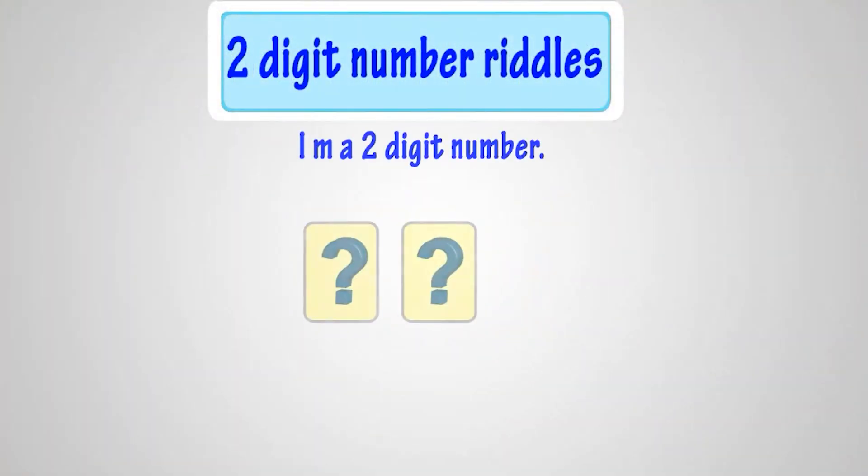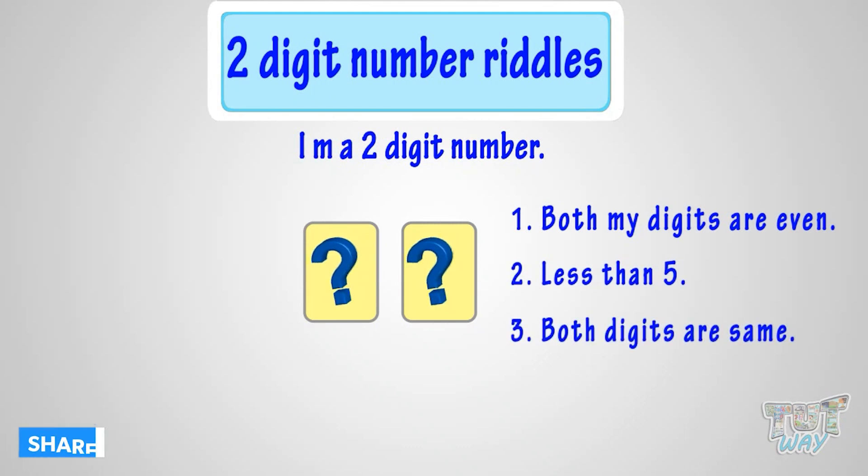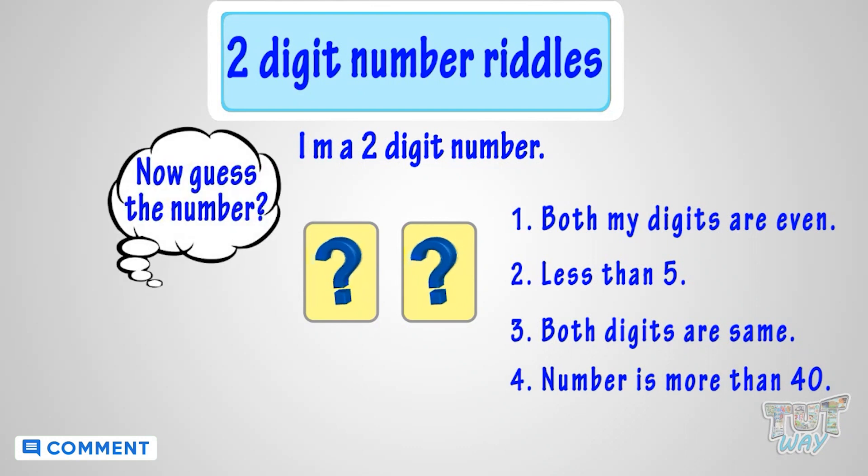I'm a two-digit number. Both my digits are even, less than five, and both digits are same. Number is more than 40. Now guess the number.